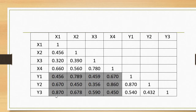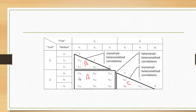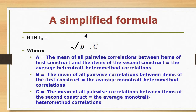These correlation coefficients were created through SPSS, just as an example. The shaded values are the correlation coefficients of items of construct 1 with the items of construct 2 — in other words, we are using hetero-method correlations here. If we take the average of these shaded values, that gives us part A.